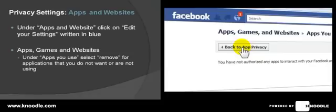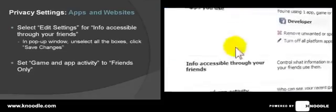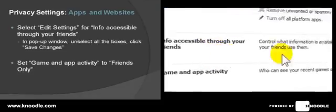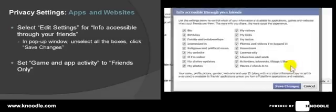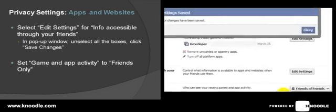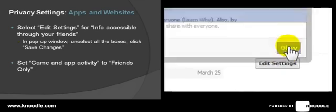Then go back to 'App Privacy.' The next one is 'Info Accessible to Your Friends' — click on 'Edit Settings' and uncheck all of the options listed there. Make sure you click 'Save Changes' and confirm OK.